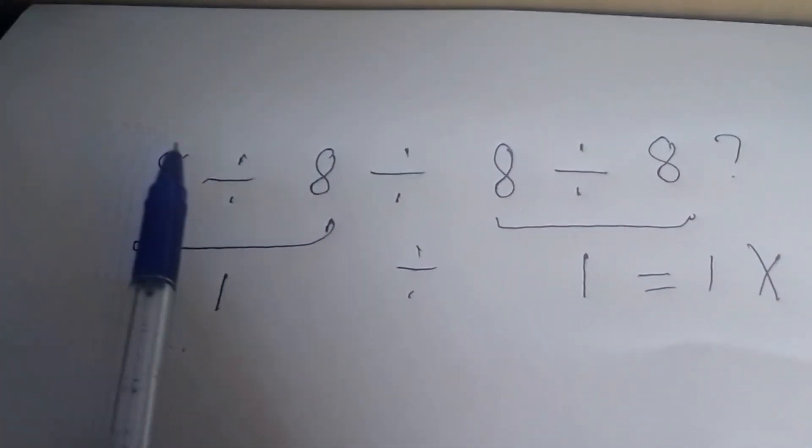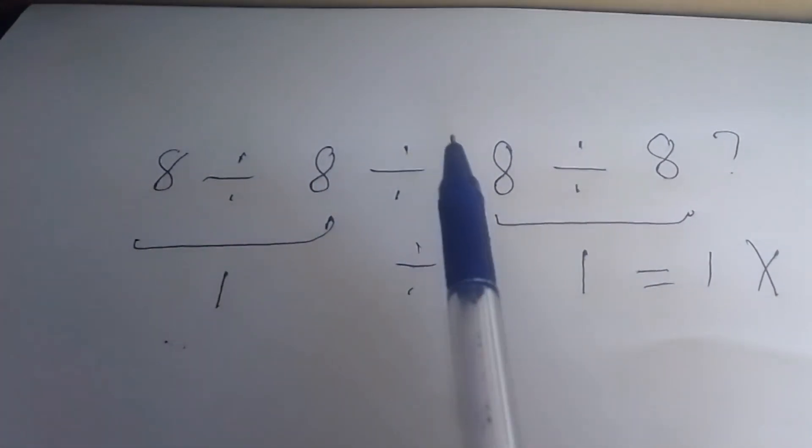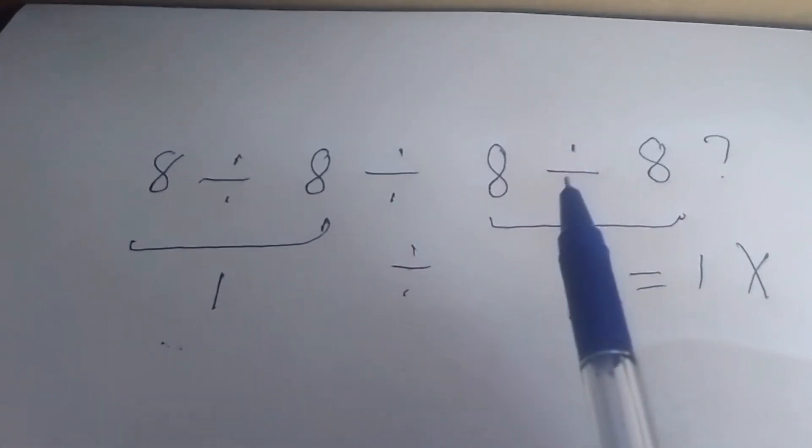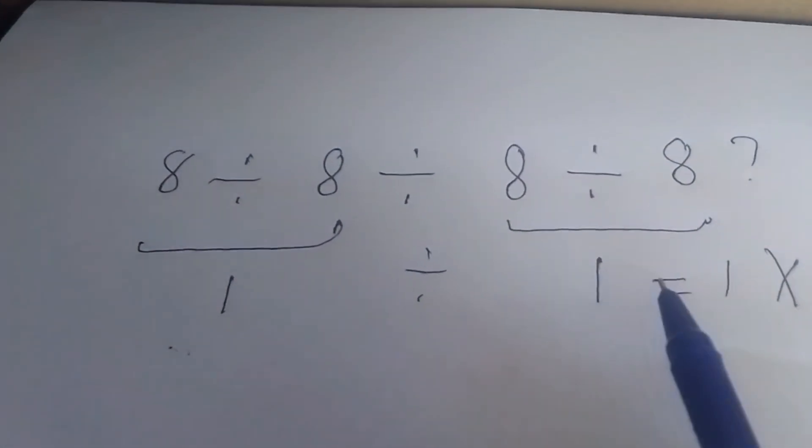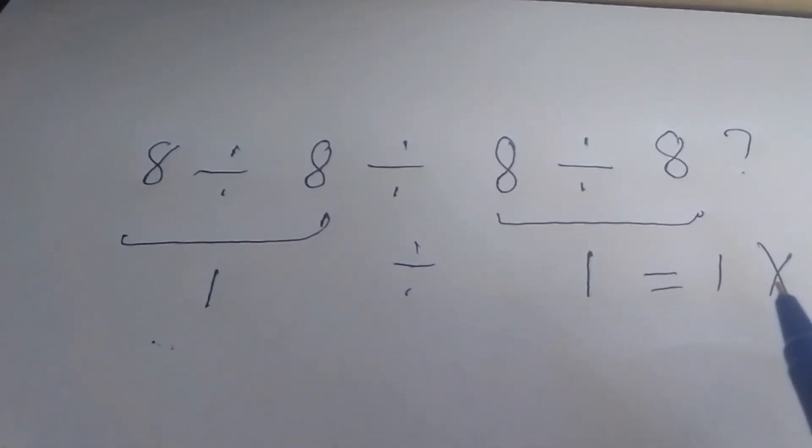Easy: 8 divided by 8, 1, 8 divided by 8, 1, 1 divided by 1 which is 1. This is completely wrong answer.